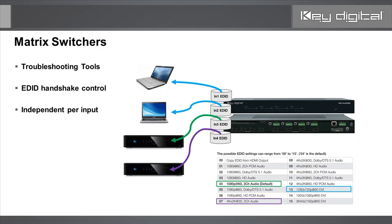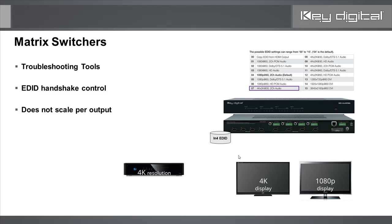Let's cover some troubleshooting tools built into the 4x4/8x8 CSAs and the Pro 8x8D — and all Key Digital matrix switchers. One of the most important is EDID handshaking control, which is a huge benefit when working with Key Digital matrix switchers. Each HDMI input can have its own EDID file selected — it's per input. For example, inputs one and two receive EDID file 13 (1280x720p DVI), input three receives EDID file 4 (1080p two-channel audio), and input seven receives a 4K two-channel audio handshake. It's very important to understand that EDID control to each source is not the same as scaling per output.